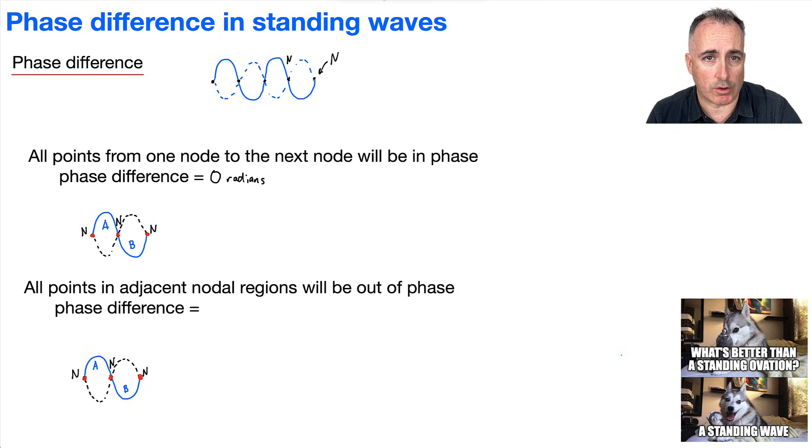So that means all these points, from A right here, all the points in A are at zero radians phase difference. So that's really important to know. This is the first piece, when things are in phase.